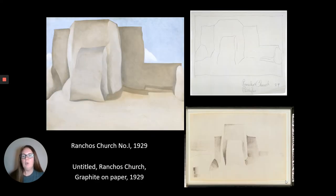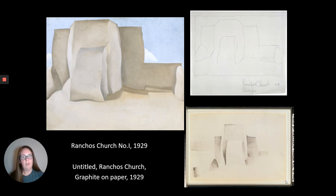This is an example of her artistic process. First she starts with a line drawing — just the outlines of the church, Rancho's Church in Rancho de Taos. Then she does a charcoal drawing with shading, looking at where the light and darker areas are. This is called Notan, a Japanese term for light and dark. Then she creates her final product, an oil painting. Not all of her drawings become paintings, but all of her paintings have drawings that go with them, and the Georgia O'Keeffe Museum is the repository of many of those drawings.